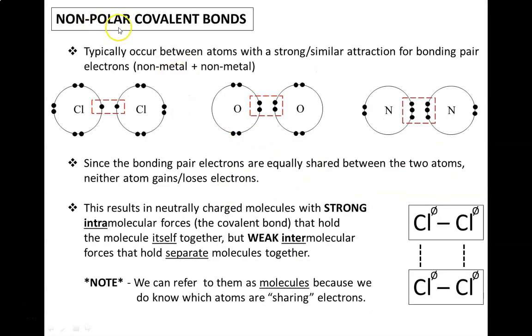Now if you recall, non-polar covalent bonds typically occur between atoms with a strong, but similar attraction for bonding pair electrons. This usually occurs between a non-metal and a non-metal. Because neither side is able to wrestle the electron away from the other, they end up sharing the electrons fairly equally. As such, neither side is more positive or negative than the other. This results in very little polarity or charge separation. So these atoms are going to be neutrally charged for the most part.